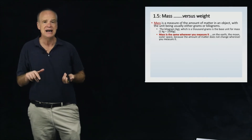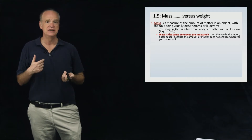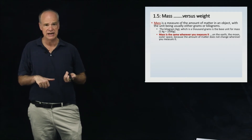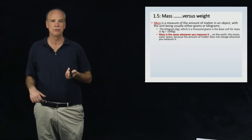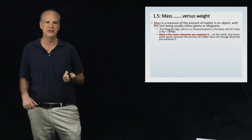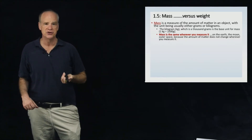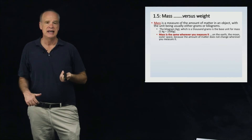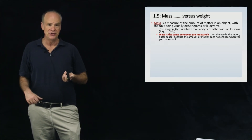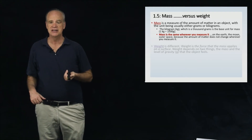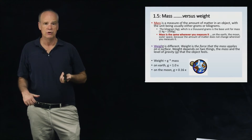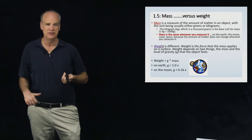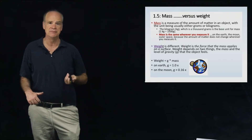Mass is a quantity that does not change no matter where you measure it, and it is typically measured in grams or kilograms. Weight, by contrast, is different — weight is a measure of the force that an object applies to a surface, and that depends on two things: the mass of the object and the amount of gravity acting on it.